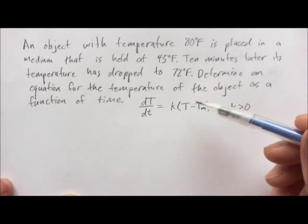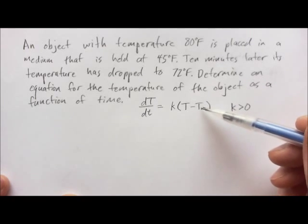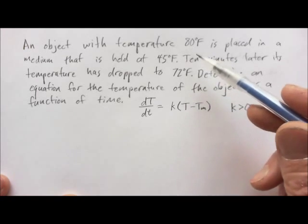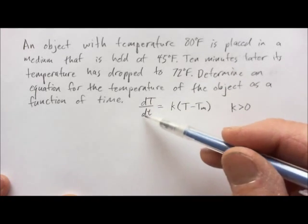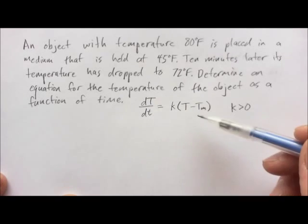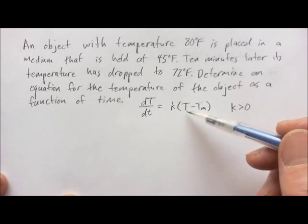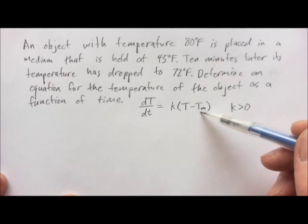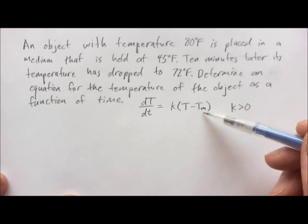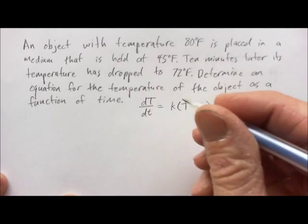So, let's think about this for a moment. If the temperature of the object is greater than the temperature of the medium, like in our case, then the object should be cooling and dT/dt, change in temperature with respect to time, should be negative. We know this is positive because the temperature of the object is greater than the medium. We know K is positive, so this product would be positive, whereas we want a negative derivative.